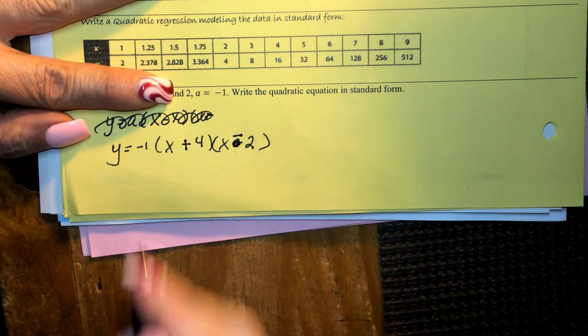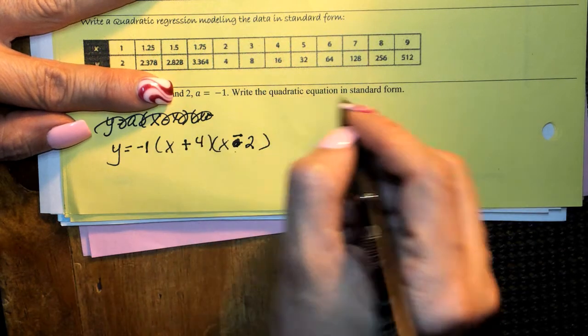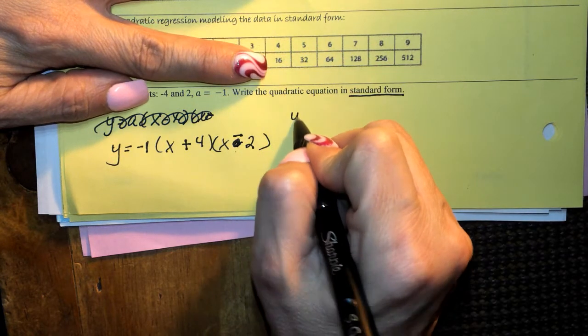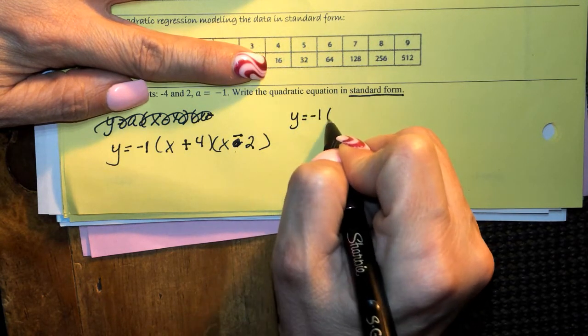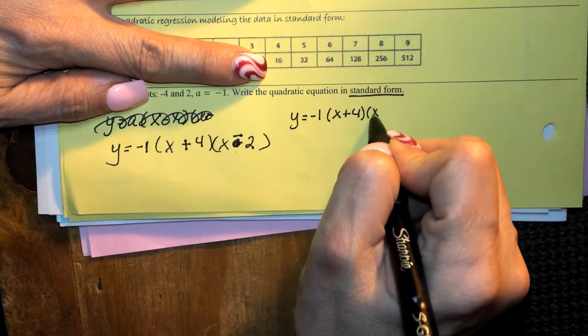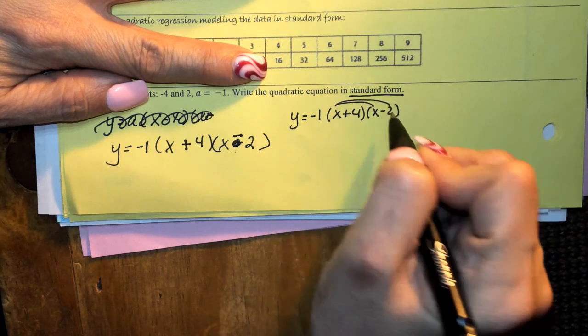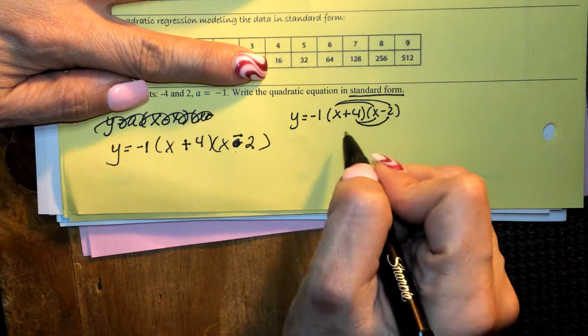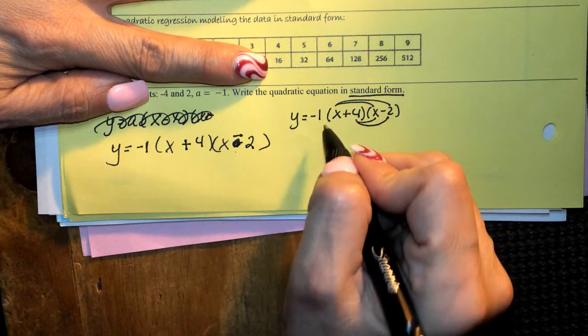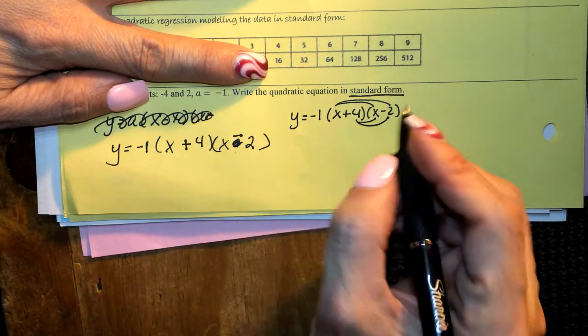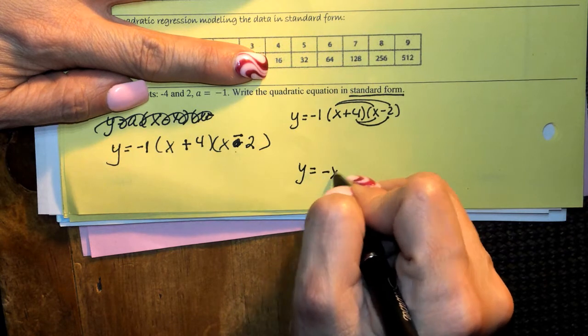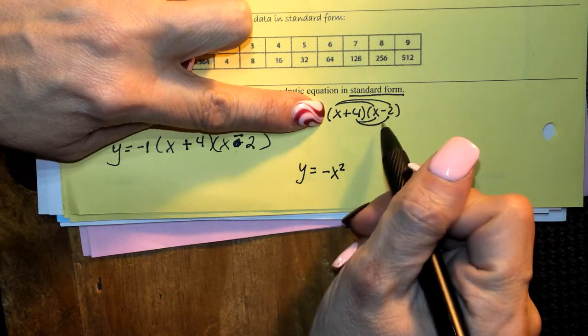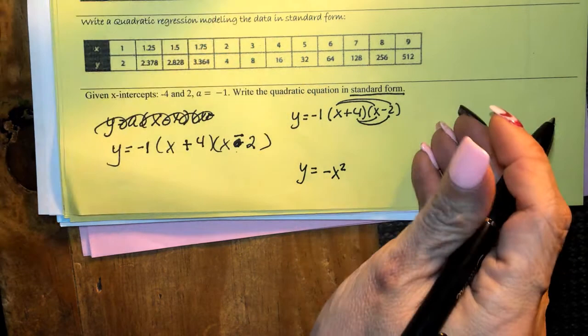Now they didn't want us to write it in that form, though. They wanted it in standard form. So once you get it like this, now we have to do negative 1 times x plus 4, x minus 2. We're going to double distribute here, double distribute here, add those middle terms, and then we're going to multiply by negative 1 at the very, very end. So your answer should be something like y equals negative x squared, something, something, something, something. So multiply all this first, combine like terms in the middle, and then multiply by the negative 1.